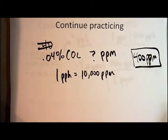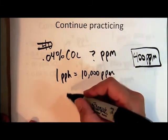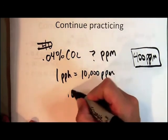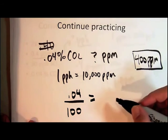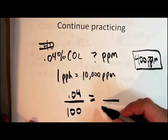Alright, another way to do it, I wanted to show you the other way, the ratio. The ratio is, parts per 100, in this case it's 0.04 parts per 100, is equal to the same thing as how many parts per million.